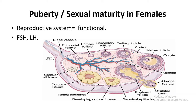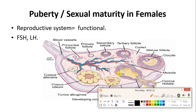The follicle stimulating hormone acts on the germinal epithelium present, and the germinal epithelium is going to produce the Graafian follicle. FSH stimulates the follicle and helps improve its growth. The luteinizing hormone triggers the ovulation process.